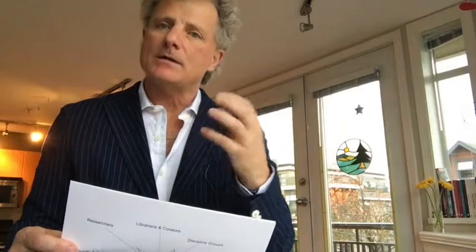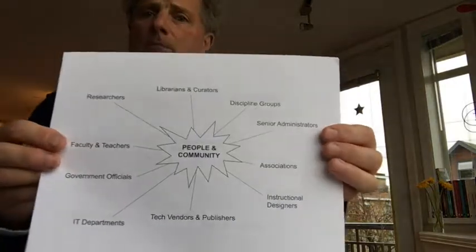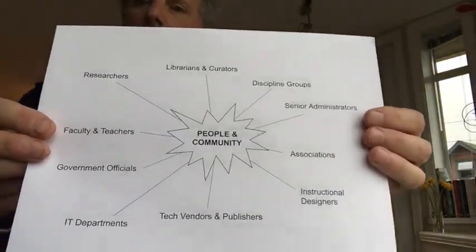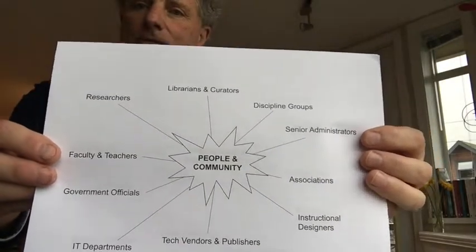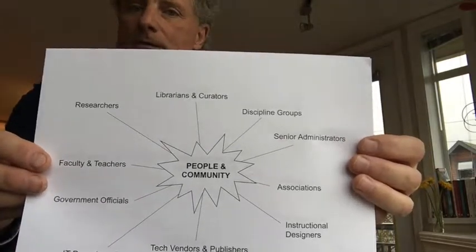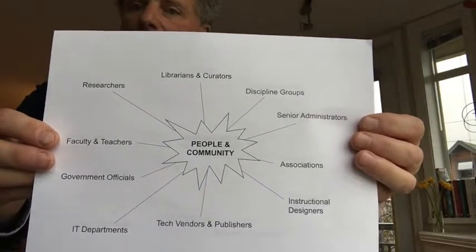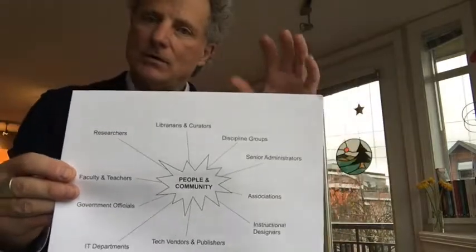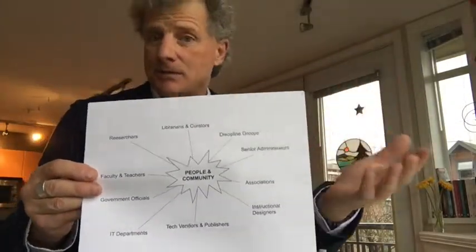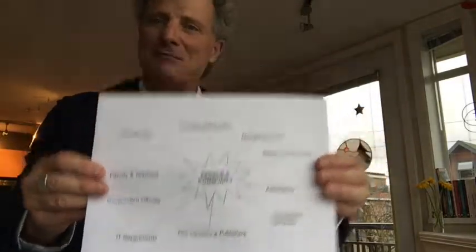Open education is more than just the resources and assets. The second component of the roadmap activity will have you talking about and describing your open education initiative not just in terms of assets, but in terms of the people and community involved. Who are the people doing open education in your initiative? Likely faculty and teachers, but also librarians and curators, potentially edtech vendors, people from outside your institution — associations, international communities, special interest groups, and so on. There's always a set of people actively involved with developing, sharing, and using open education.